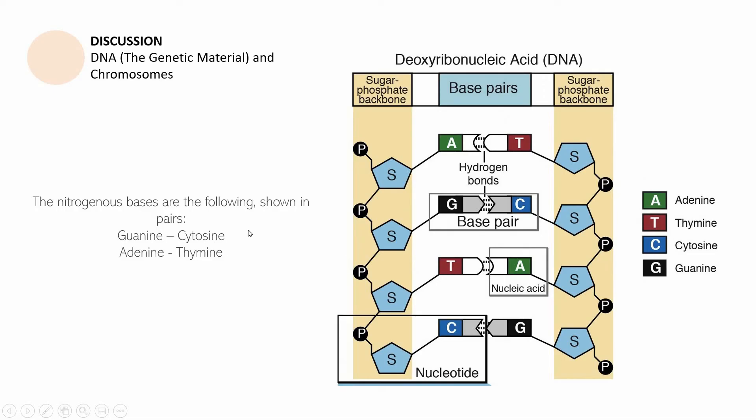The nitrogenous bases are the following, also shown in pairs. So A right here is adenine. It's a nitrogenous base. It is paired with thymine. In the same way, guanine is paired with cytosine. And as you notice as well, adenine and thymine, they have in between them two hydrogen bonds. Whereas for G and C, guanine and cytosine, they have three hydrogen bonds.